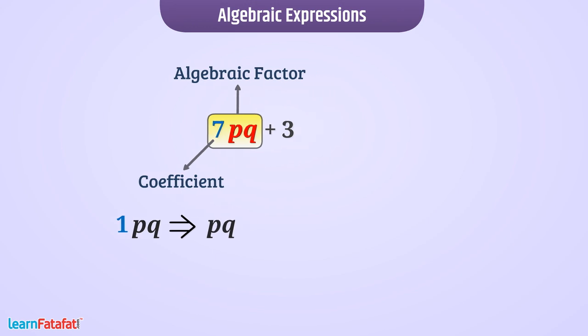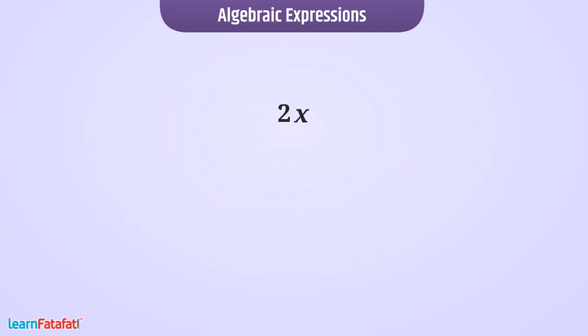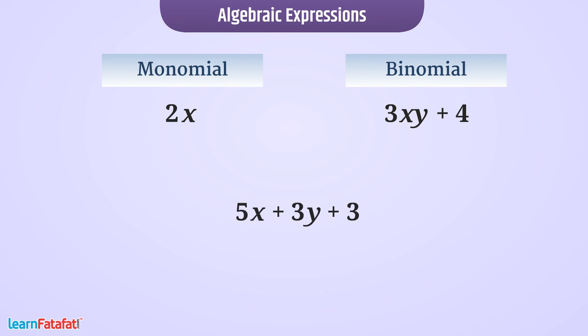Sometimes expression contains only one term. Such expression is called a monomial. For example 2x is a monomial. If the expression contains two terms then it is a binomial expression. If the expression contains three terms then the expression is called trinomial.